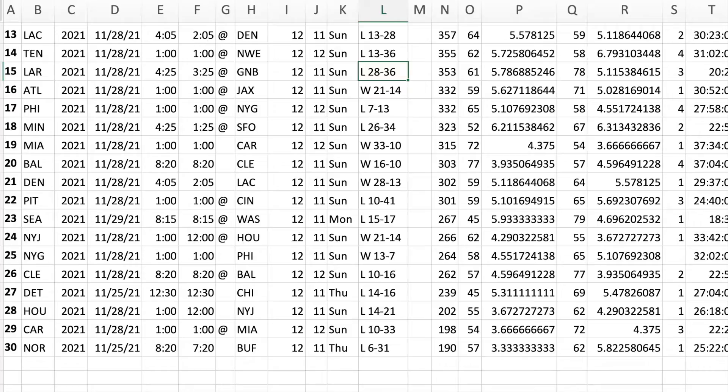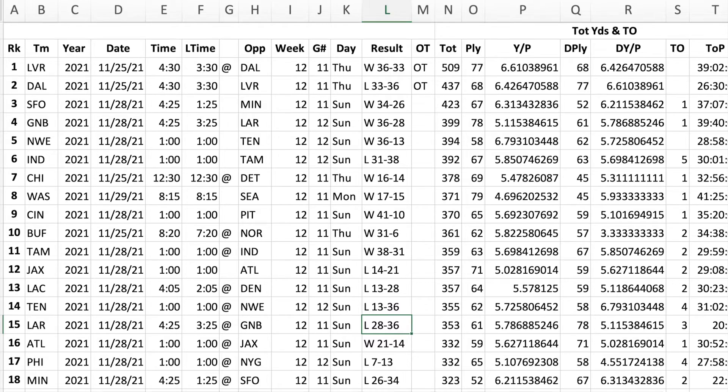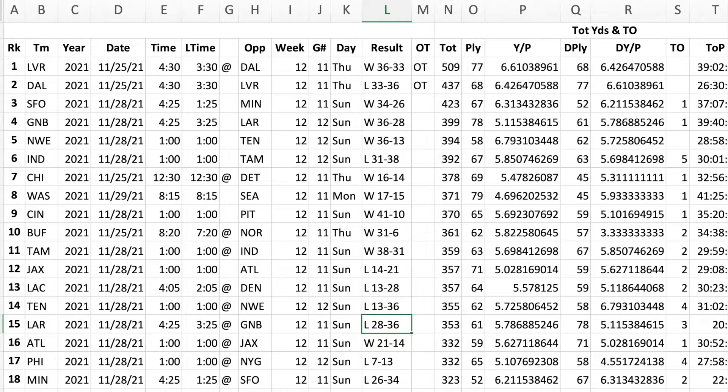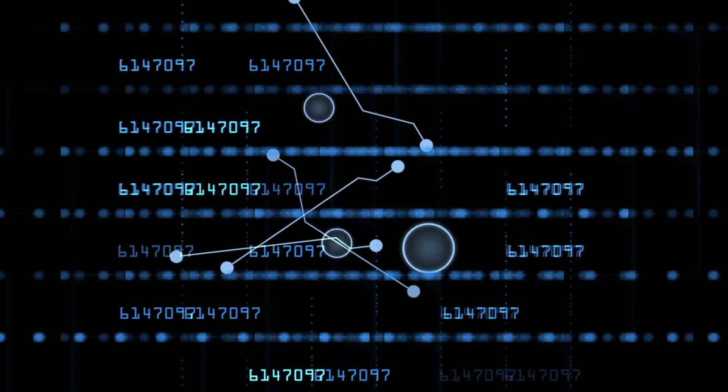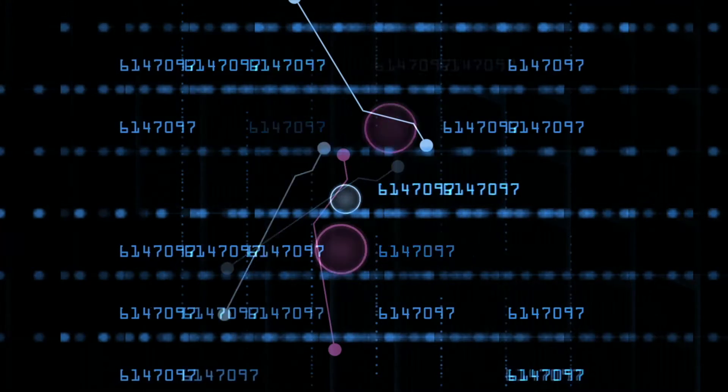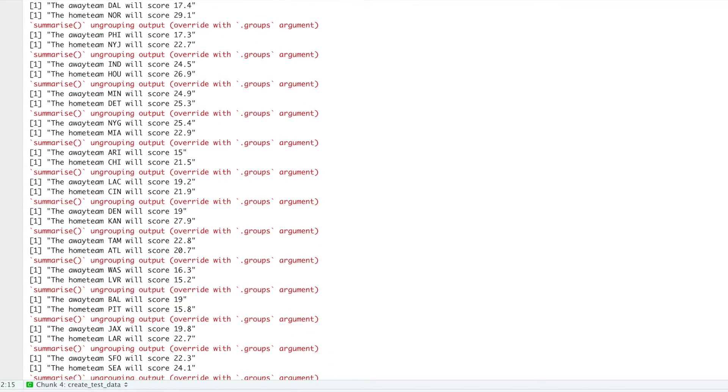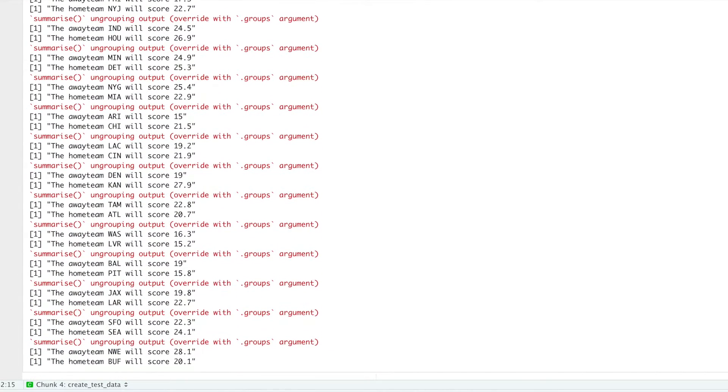The model we build is gonna do the same thing. So we're gonna need to collect past NFL game data that's gonna contain all the outcomes, scores, locations, and game statistics for the past games. Then we're gonna train a model that ingests all of this data and learns the relationship between the game scores and all of the game statistics. And then we're gonna use this model to predict future scores based on what it's learned.